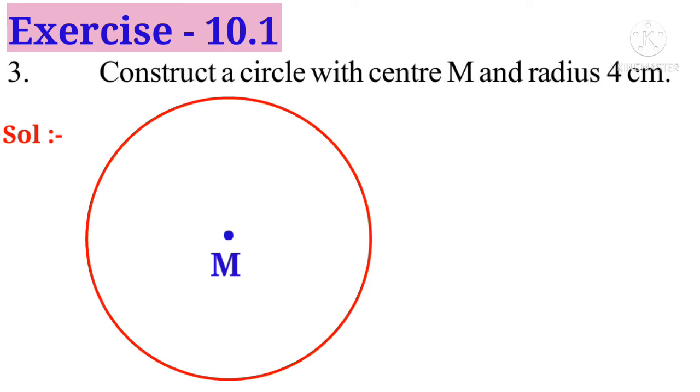Now put a point on the circumference of the circle and name it as P. Now join MP with a line segment. Now it is 4 cm. So a circle is drawn with center M and radius 4 cm.